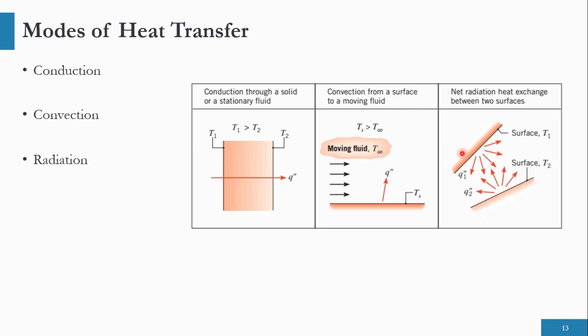Coming to radiation, let us assume there are two independent surfaces placed near to each other. All surfaces emit electromagnetic waves. This electromagnetic wave transmission is called radiation — direct heat exchange between the two surfaces.